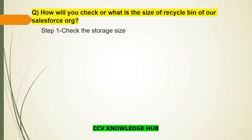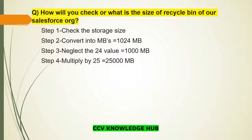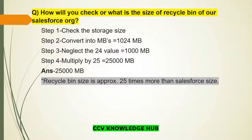Let's take an example: 1 GB is my org size. Step two: convert 1 GB into MB — 1 GB equals 1024 MB. Step three: neglect the 24, so for calculation purposes we take 1000 MB. Step four: multiply by 25 — 1000 × 25 = 25,000 MB. So the recycle bin size is approximately 25 times more than your org storage size.